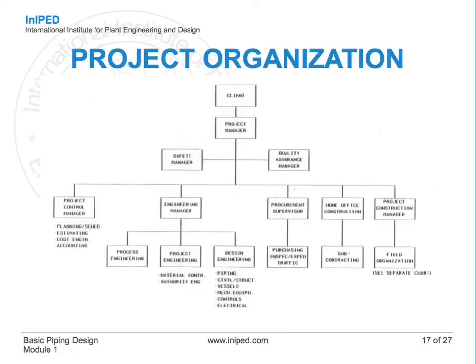The next slide shows the hierarchy of a typical project. At the top of the organization, we can see the client and the project manager. The piping design is located under the engineering manager and design engineer.